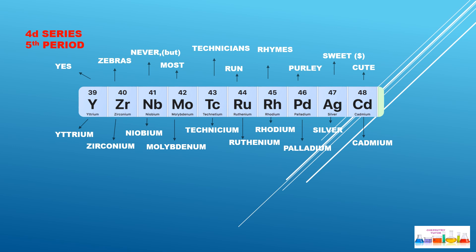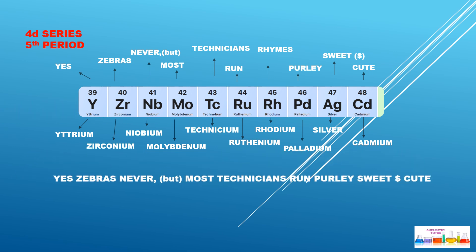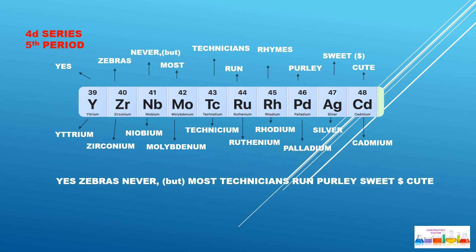The mnemonic for the 4d series is: 'Yes zebras never but most technicians run rhymes purely sweet and cute.' Yes = Yttrium, Zebras = Zirconium, Never = Niobium, But = Molybdenum, Most = (most), Technicians = Technetium, Run = Ruthenium, Rhymes = Rhodium, Purely = Palladium, Sweet = Silver, Cute = Cadmium. Just learn this phrase: 'Yes zebras never but most technicians run purely sweet and cute' — and the 4d series is learned.